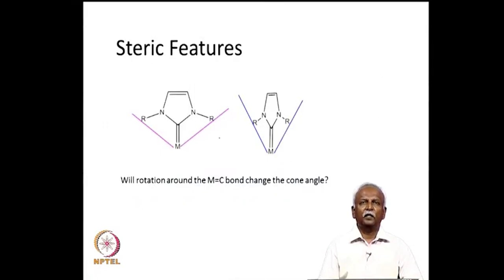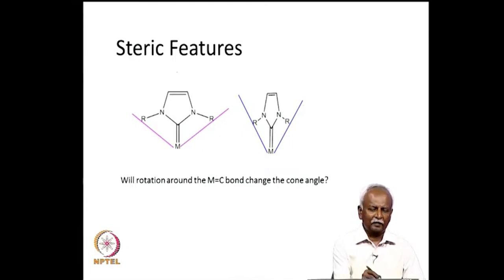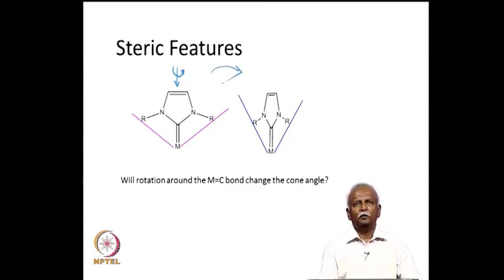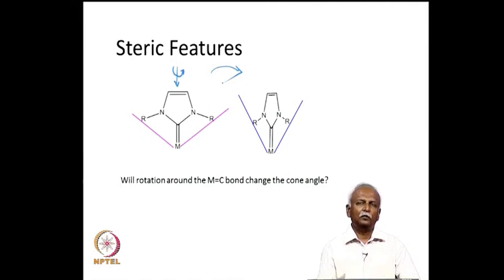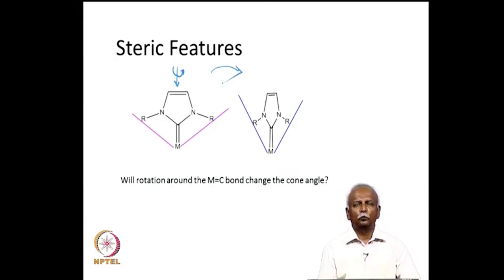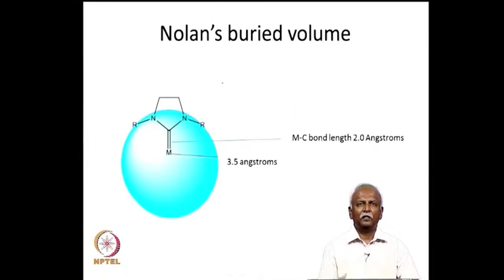The most popular NHC is an imidazole-based N-heterocyclic carbene. Much of the ligand is reasonably flat, and if one rotates the ligand around the metal-carbon axis, the conformation changes significantly. The Tolman's cone angle you would obtain depends very much on how you orient the ligand with respect to this axis, making the simple cone angle approach inadequate for NHCs.